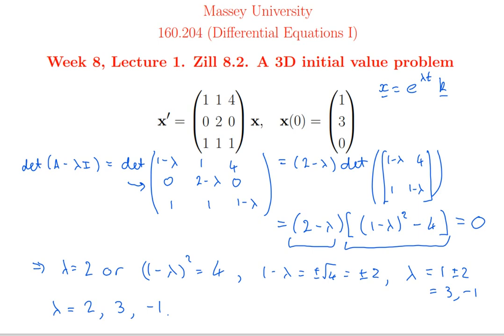For each eigenvalue I have to compute an eigenvector. The eigenvectors are guaranteed to be linearly independent when the eigenvalues are distinct, giving three linearly independent solutions and thus the general solution to the differential equation. Then I can plug in the initial value to find the particular solution.